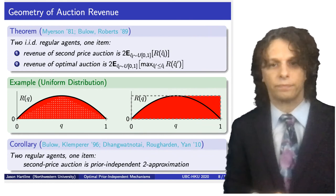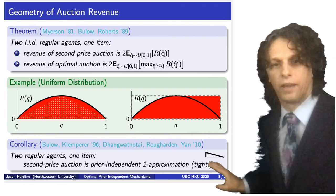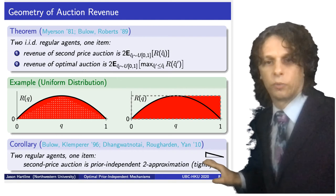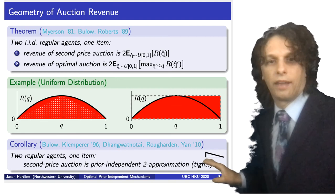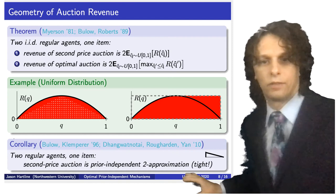This 2-approximation result is tight. The tightest revenue curve is a right triangle. Normalizing height to one, the revenue from one agent is 1/2, and from two agents is 1 for the second price auction. The optimal auction sets a reserve price to achieve the rectangle area, and twice that gives 2. So the 2-approximation for the second price auction is tight.